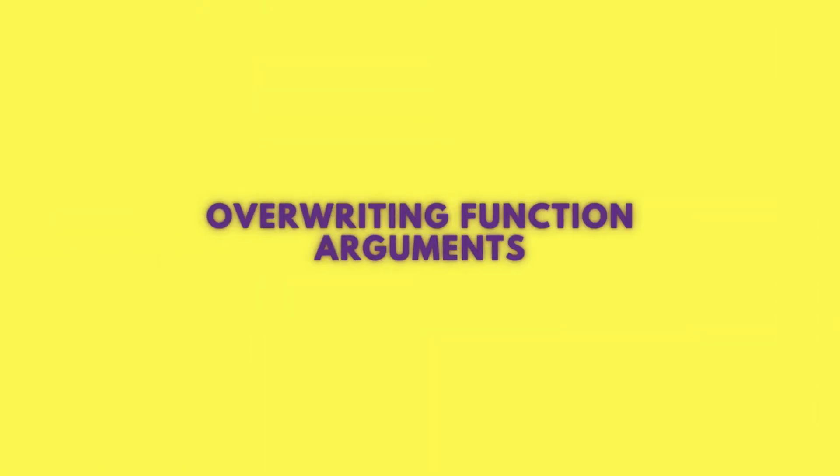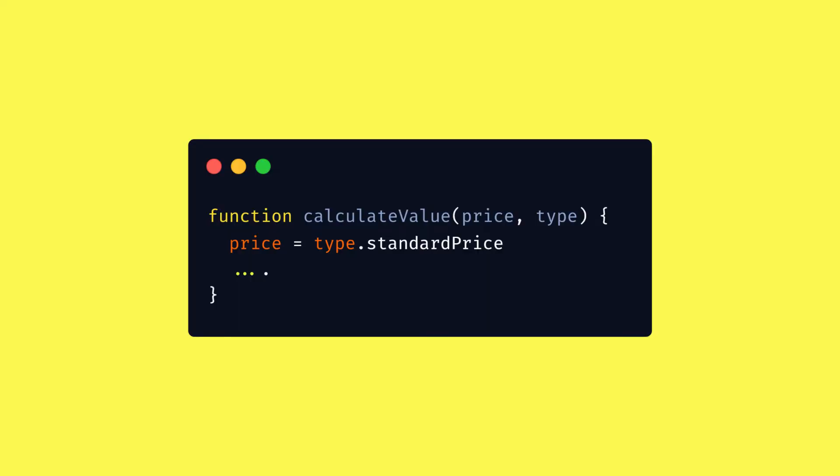Another point is overwriting arguments in a function. This one is more debatable — it's essentially an immutability aspect. By all practical accounts it makes sense to me, because it's about keeping functions clean and testable. Folks from the functional programming world would definitely agree. But it's a totally fine hack that comes with a little bit of a trade-off.